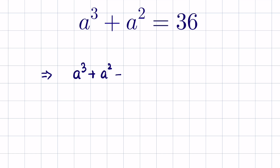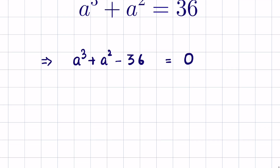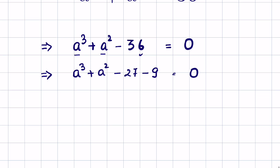So it will be minus 36 is equal to 0. Now we can write 36 in such a form that one term is in cube form and one term is in square form. So a cube plus a square minus 27 minus 9 — since minus 27 minus 9 equals minus 36 — is equal to 0.